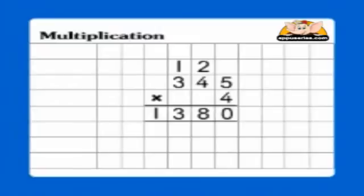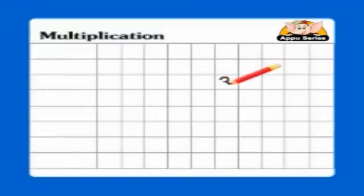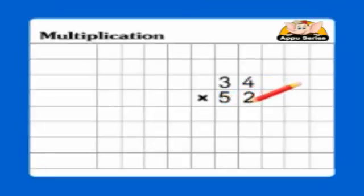That was some nifty piece of multiplication work, wasn't it, folks? Practice it again to master it. In the next section, we shall multiply 34 by 52. What? Did you hear correctly? Multiplied by a two-digit number? But how is that possible? Can you guess?